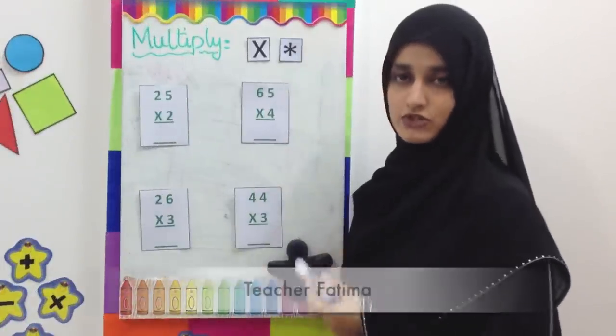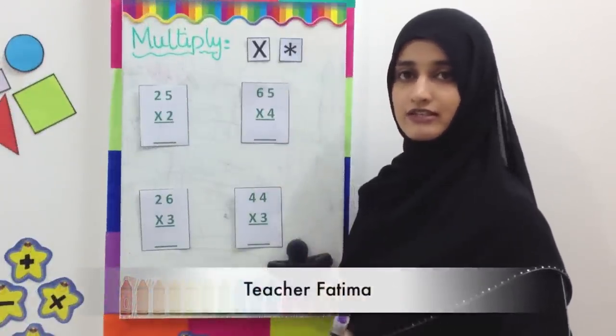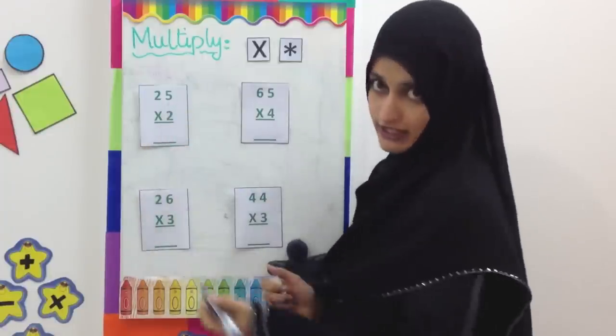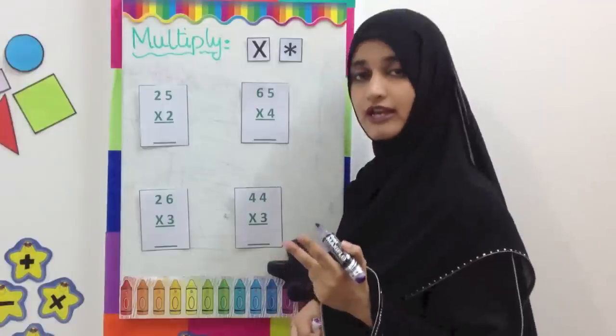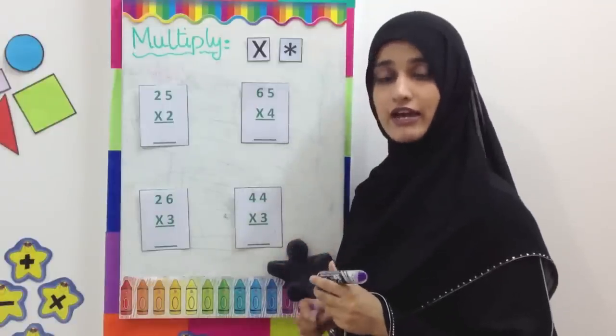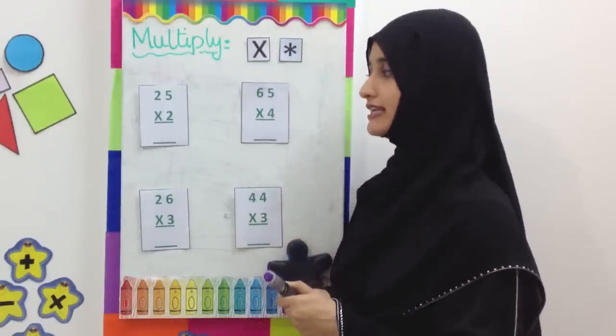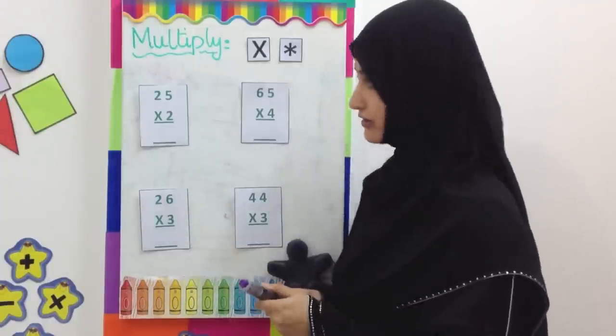When we are going to multiply these numbers together, we are going to see that when we multiply the numbers which are in the units place, we will get two digit numbers. And like we carried in addition, we are going to carry the second number on the tens side. Look carefully.